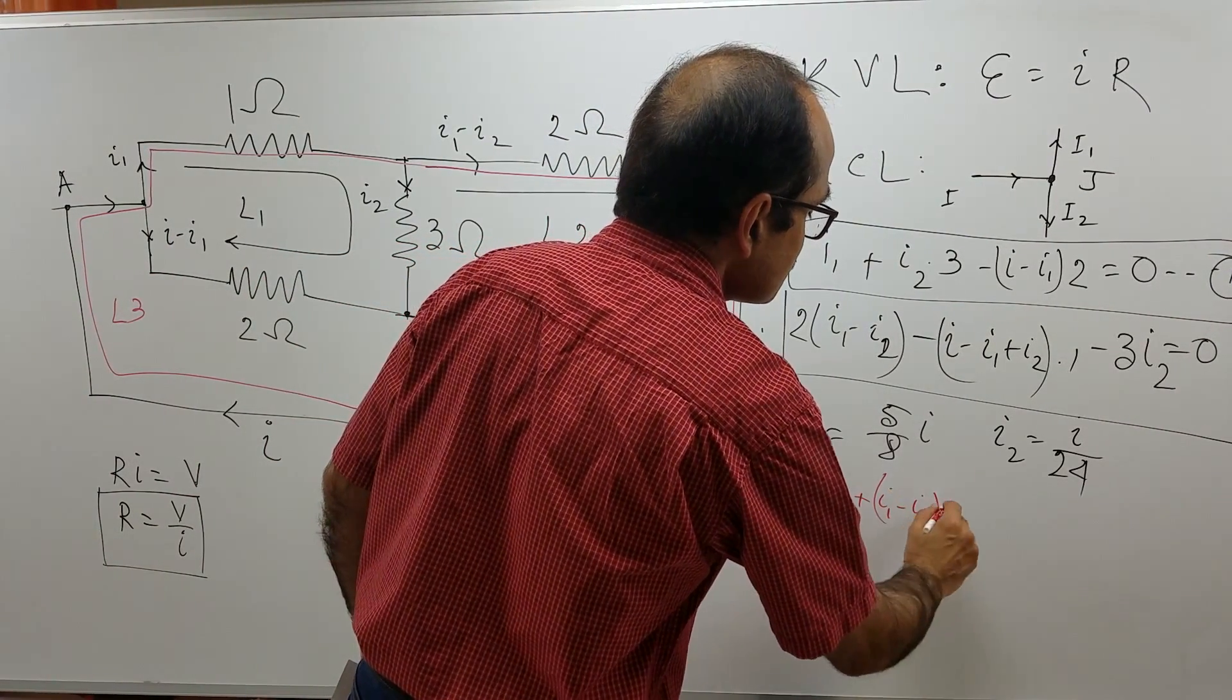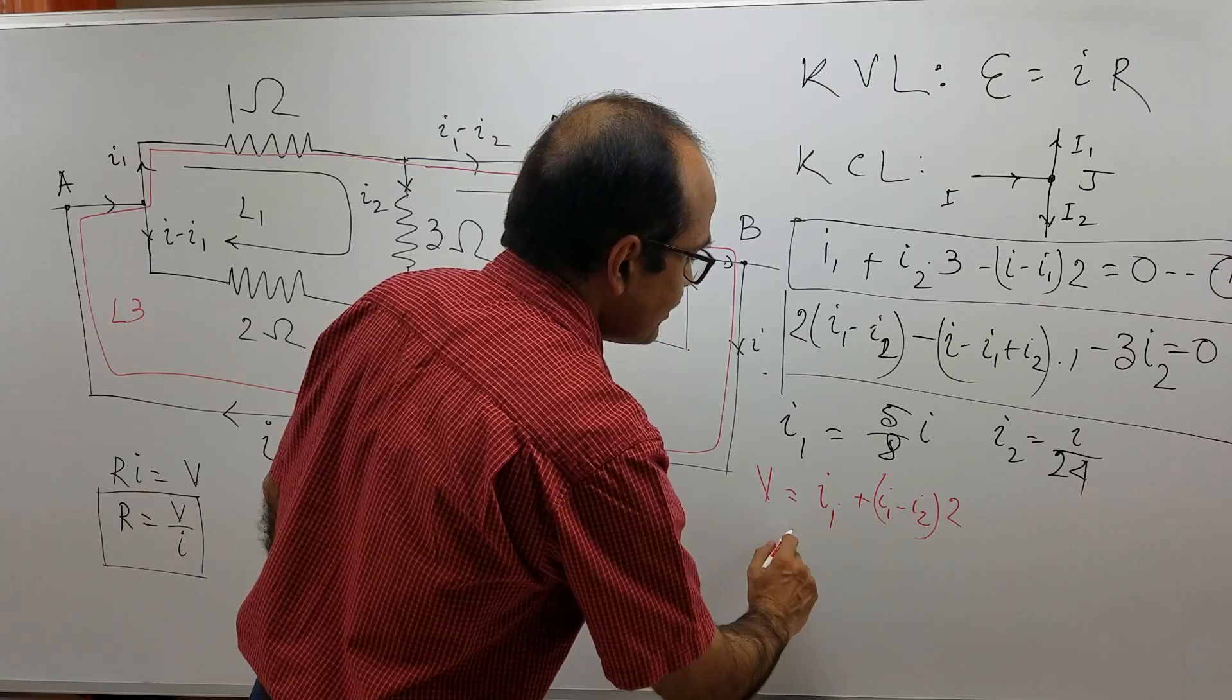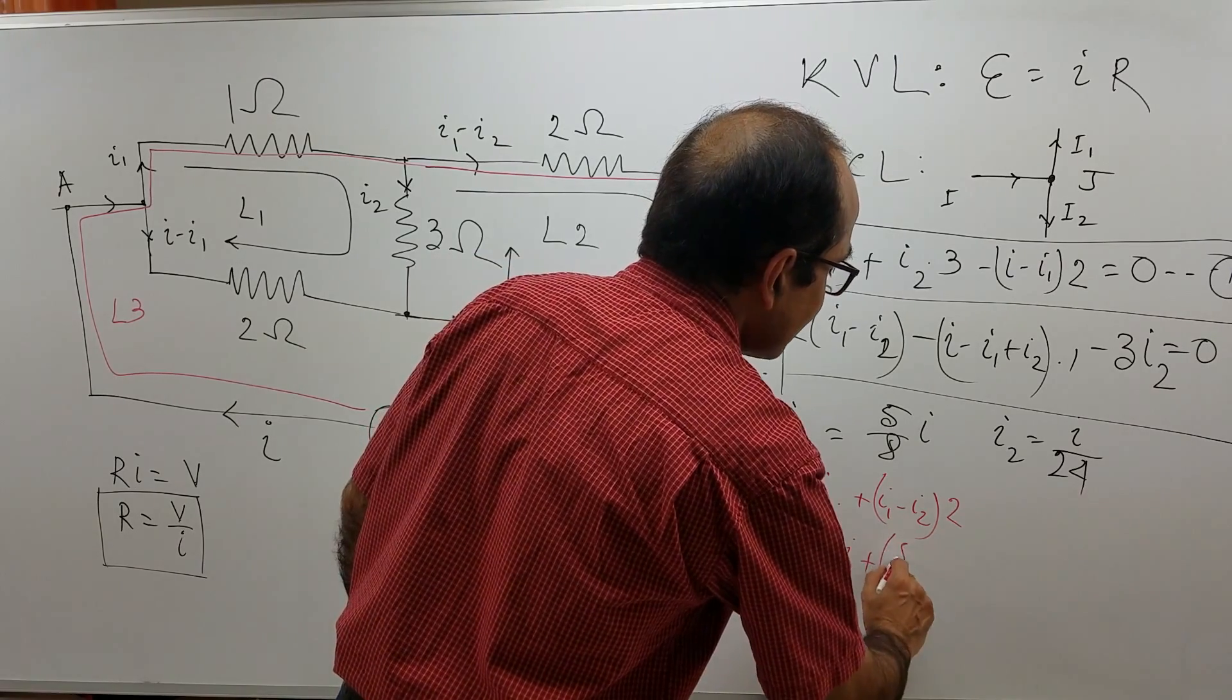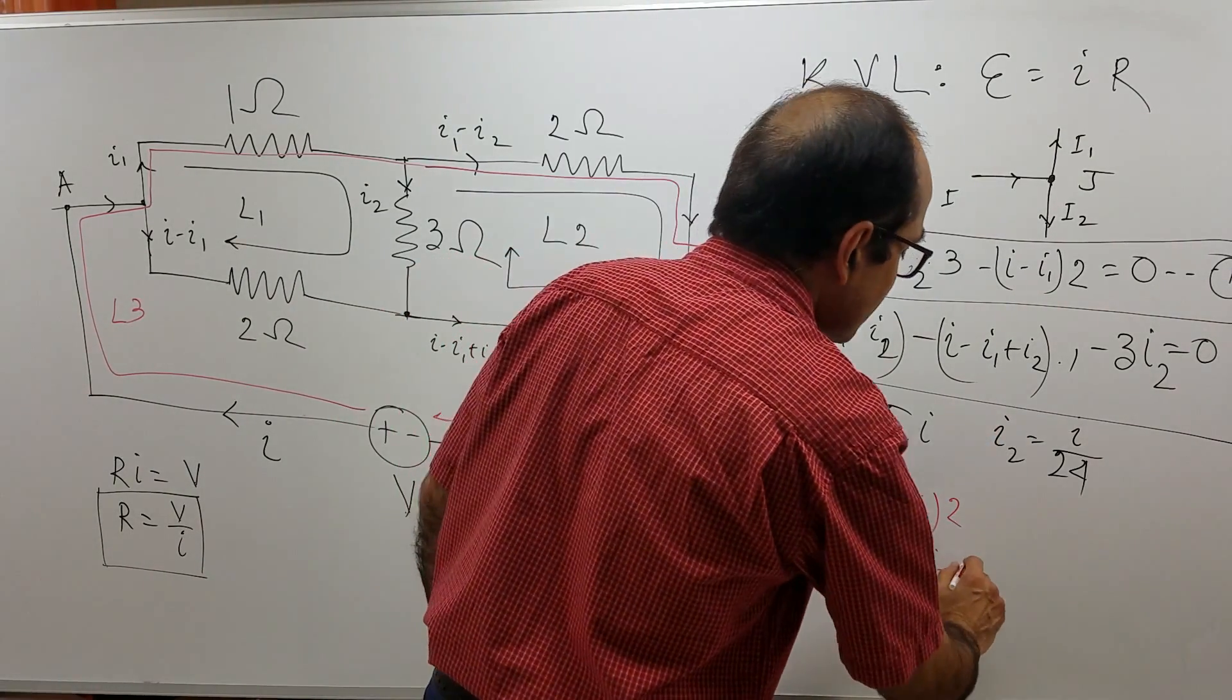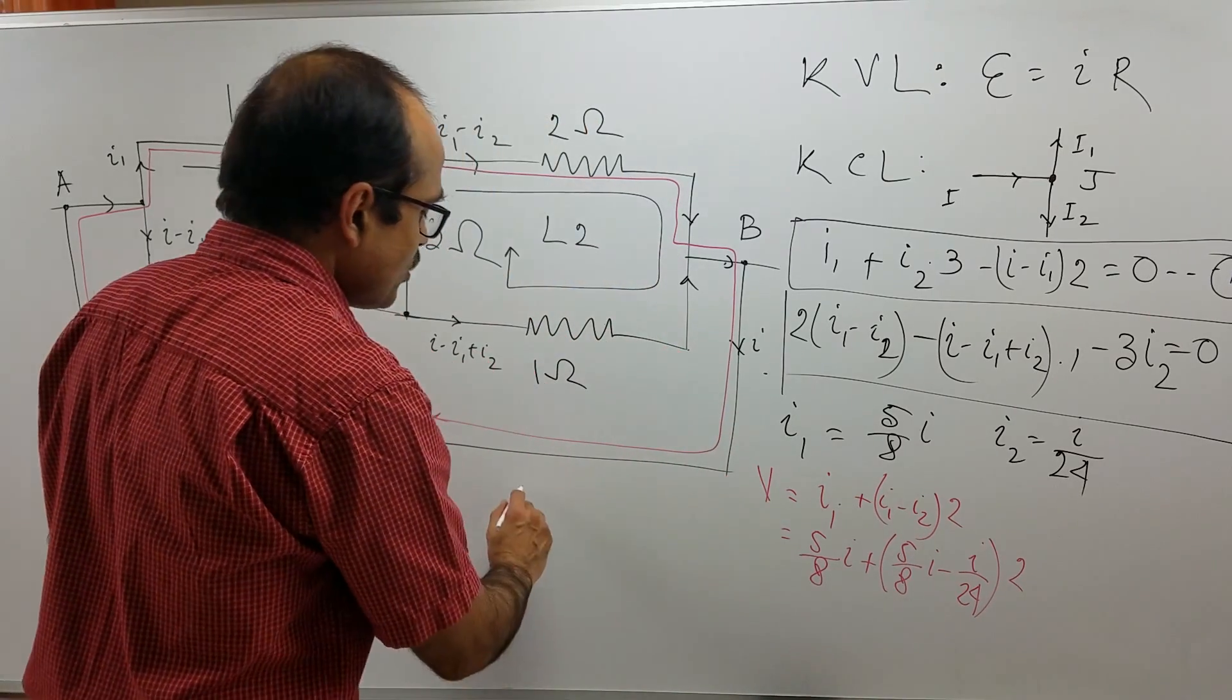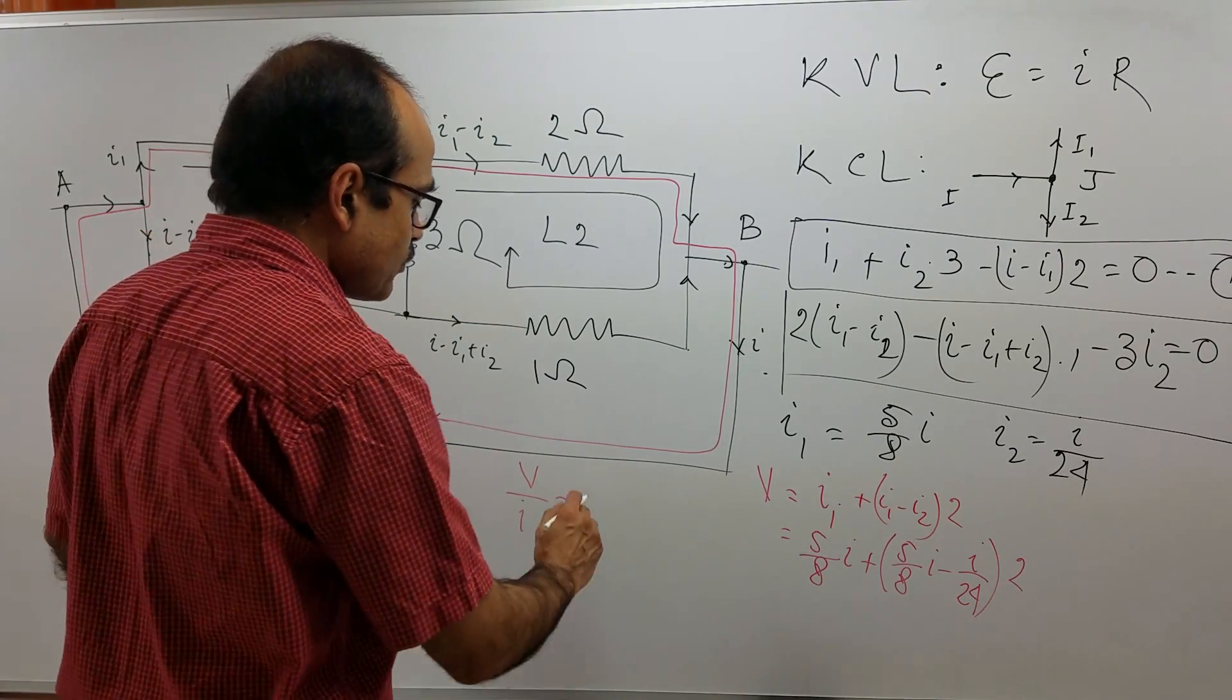So if I put I1 equal to 5 over 8 I here, 5 over 8 I plus again 5 over 8 I minus I2 is I over 24 times 2. From this equation we get V over I is equal to 43 over 24.